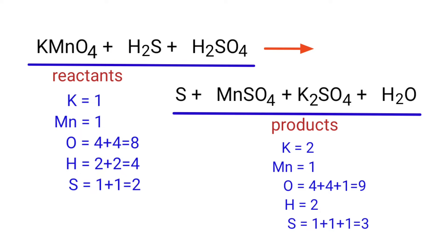On the reactants side, there are one potassium atom, one manganese atom, eight oxygen atoms, four hydrogen atoms, and two sulfur atoms. On the products side, there are two potassium atoms, one manganese atom, nine oxygen atoms, two hydrogen atoms, and three sulfur atoms.